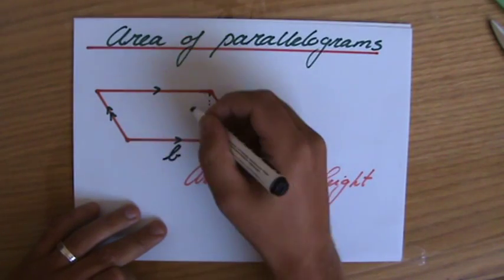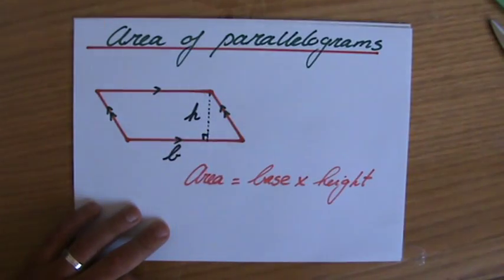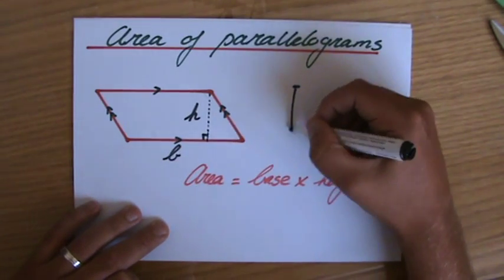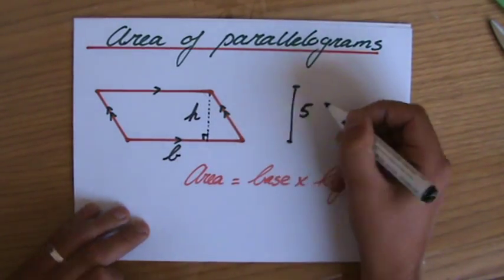And then this is the base, and that is the height. Or sometimes they give you the base here, and then on the outside of the parallelogram, they're going to say, well, it is five centimeters high.